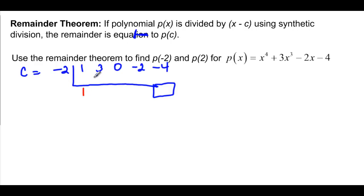Bring down 1, multiply by negative 2, and then add this row so we get 1. And 1 times negative 2 would be negative 2 plus 0 would be negative 2. Remember, multiply on the diagonal, so that would be positive 4. And then add the column so that gets us positive 2. And 2 times negative 2 would be negative 4, and that would give us negative 8. So what this is really saying is if we were to plug and chug negative 2 into this function, we would end up with negative 8.